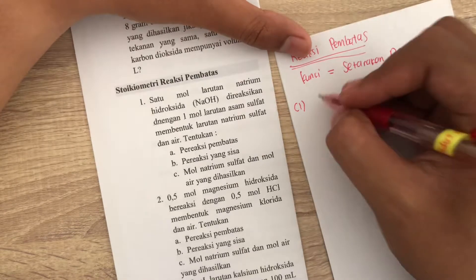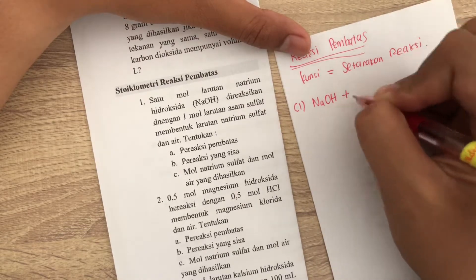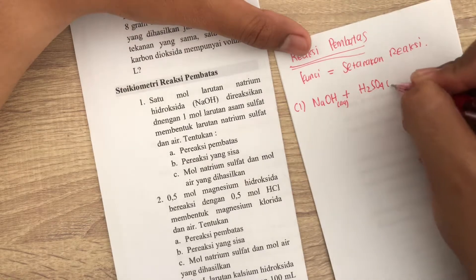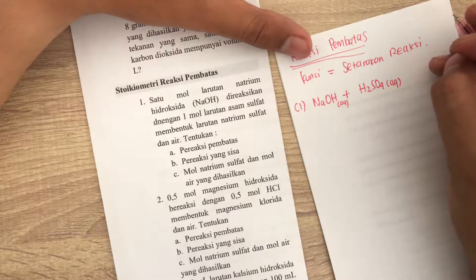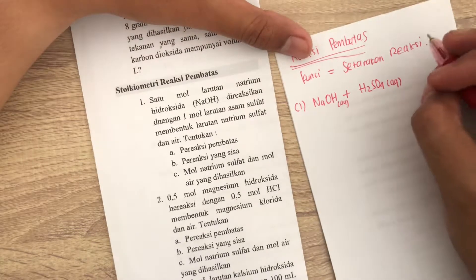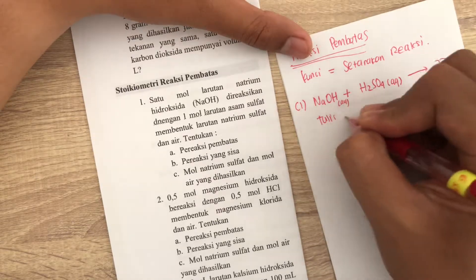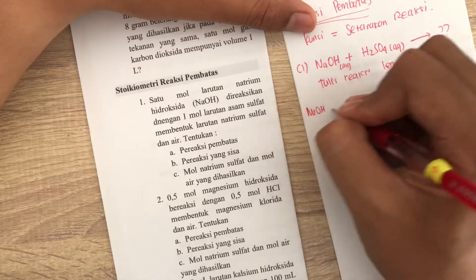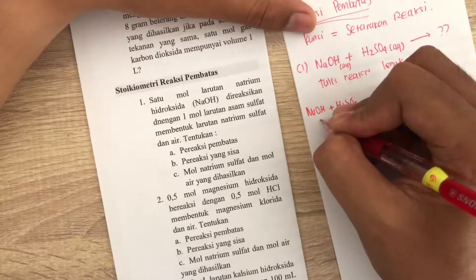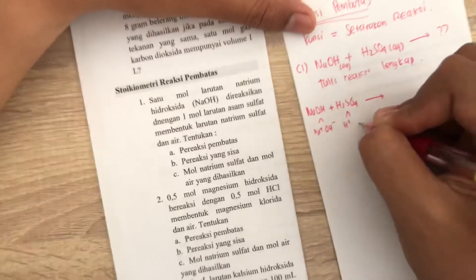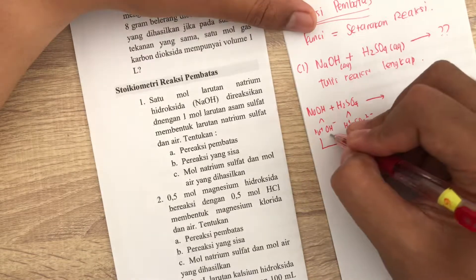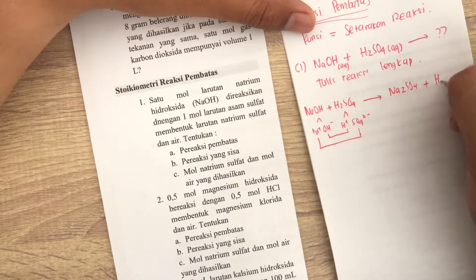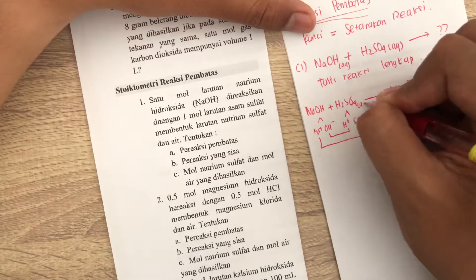Satu mol larutan natrium hidroksida, berarti ini NaOH, direaksikan berarti ditambahkan. Karena larutan berarti fasanya aqueous, ditambah dengan satu mol larutan asam sulfat. Asam sulfat berarti adalah H2SO4 aqueous, sama-sama satu mol. Tentukan reaksi pembatas, reaksi yang sisa. Ini berarti kita harus tulis reaksi lengkap. Berarti reaksi lengkapnya seperti ini ya, NaOH ditambah H2SO4, ini menjadi, kalau kita uraikan, Na plus OH minus, H plus SO4 2 minus. Berarti ini tukaran, positif sama negatifnya tukaran pasangan. Berarti jadinya Na2SO4, karena ada dua kan ini, sama H2O. Fasanya liquid, fasanya aqueous, aqueous, aqueous.